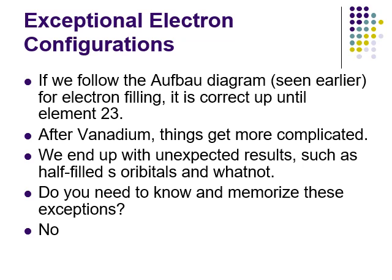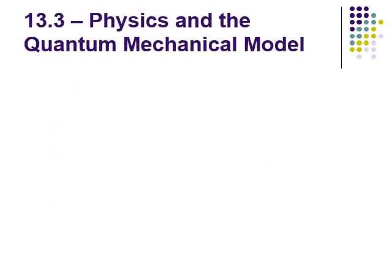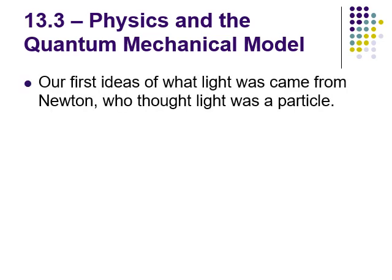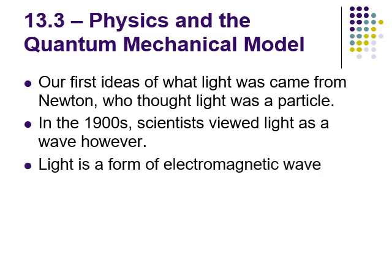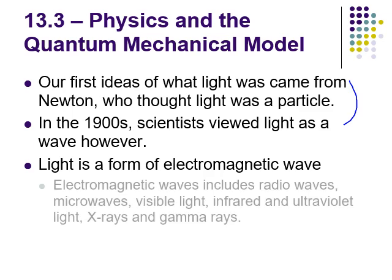Now we're going to look at physics and the quantum mechanical model — it's all related. Newton thought light was a particle, like matter. In the early 1900s, scientists viewed light as a wave — electromagnetic energy. Interestingly, we now say both are right. Light can be treated as an electromagnetic wave.